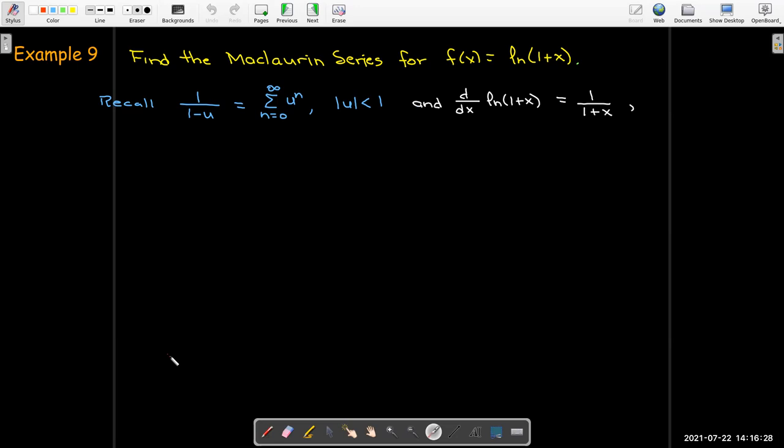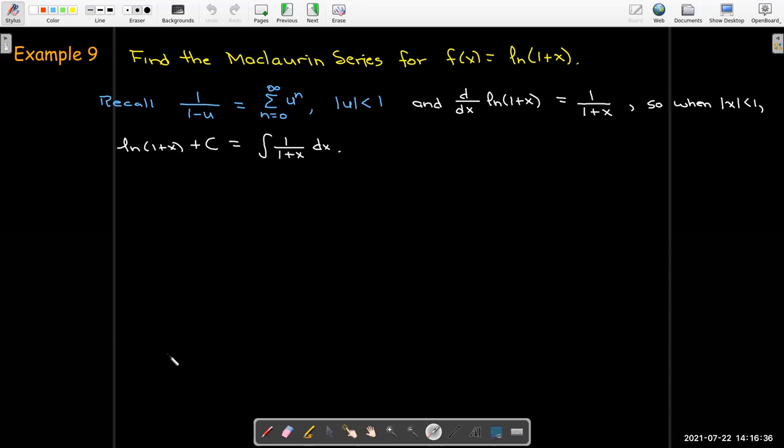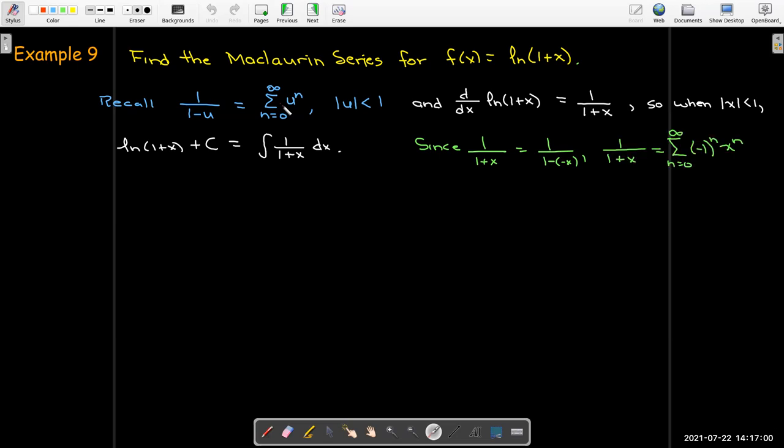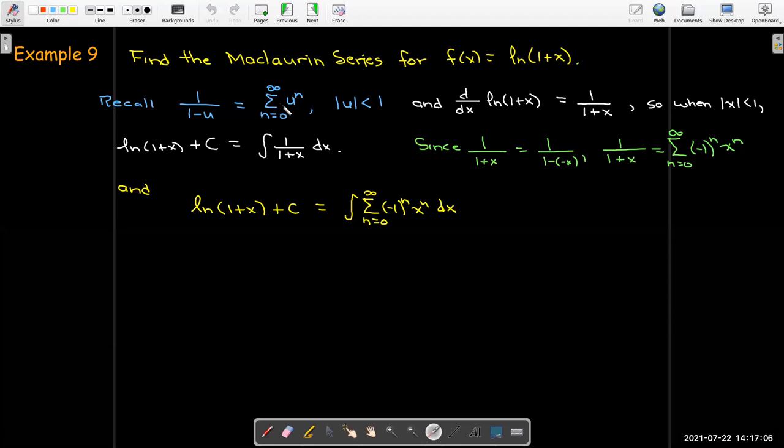And we can see that the derivative of the natural log of 1 plus x is 1 over 1 plus x. So therefore, natural log of 1 plus x plus some constant will be the antiderivative of 1 over 1 plus x. And I can think of 1 over 1 plus x as 1 over 1 minus negative x. So our u value is negative x. And I can put that into my geometric series. And go ahead and integrate that geometric series term by term.